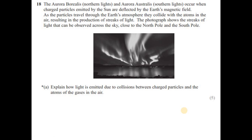Question 18: the Aurora Borealis (northern lights) and Aurora Australis (southern lights) occur when charged particles emitted by the sun are deflected by Earth's magnetic field. As the particles travel through Earth's atmosphere, they collide with atoms in the air, resulting in the production of streaks of light observable near the north or south poles. Explain how light is emitted due to these collisions.